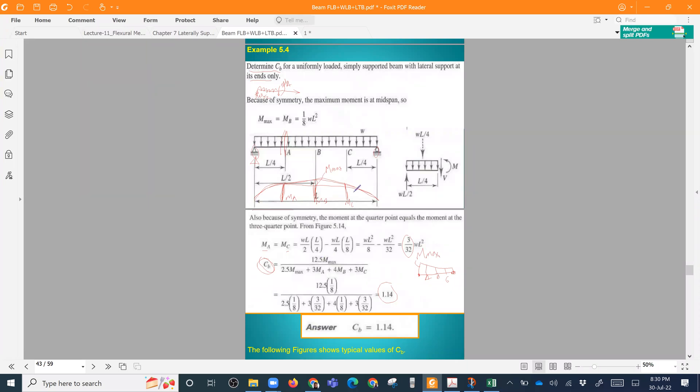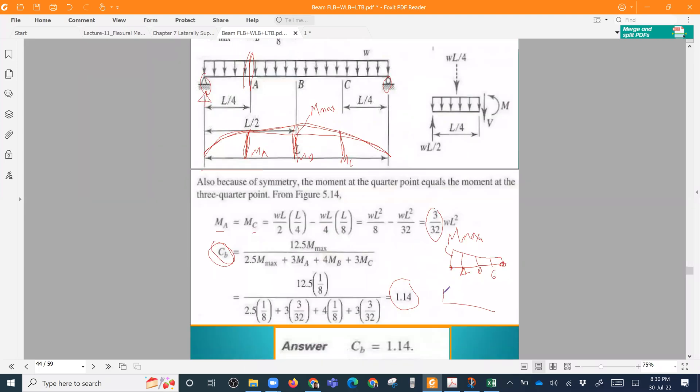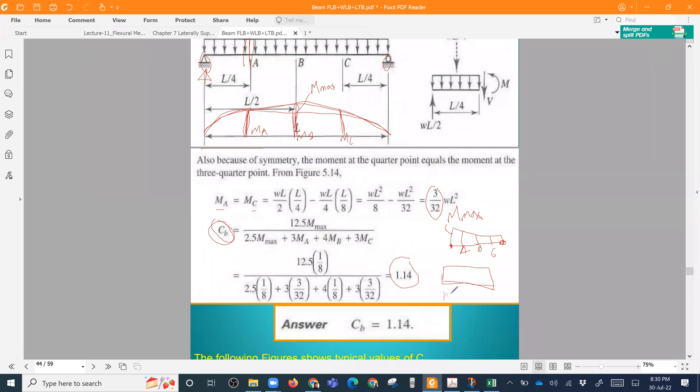M max is maximum moment. I am showing the moment diagram. Now, let's make sure that all the moment is the same. The uniform moment is the same. What happens? M max equal to m a equal to m b equal to m c in the uniform moment.